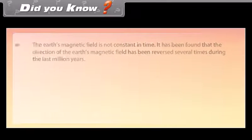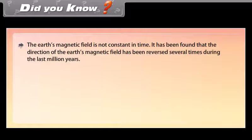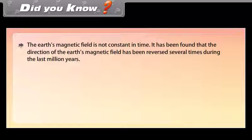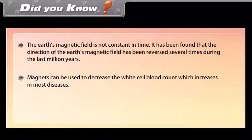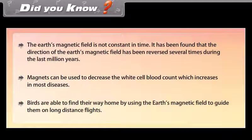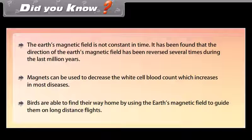Did you know: The Earth's magnetic field is not constant in time. It has been found that the direction of the Earth's magnetic field has been reversed several times during the last million years. Magnets can be used to decrease the white blood cell count, which increases in most diseases. Birds are able to find their way home by using the Earth's magnetic field to guide them on long-distance flights.